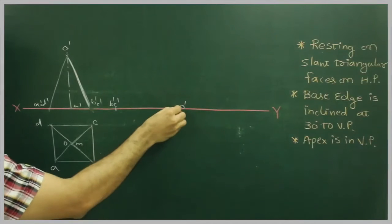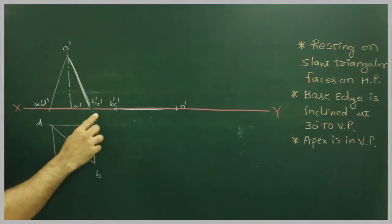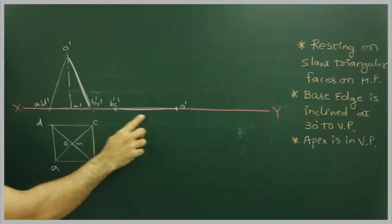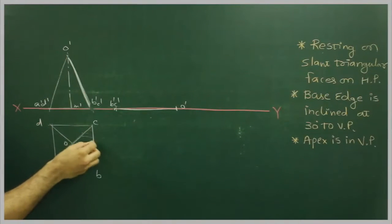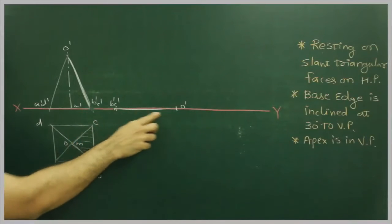So since I want second stage, where I want B'C' and O' horizontal, that is why I have done first stage like this. I want this triangular face resting on horizontal plane.